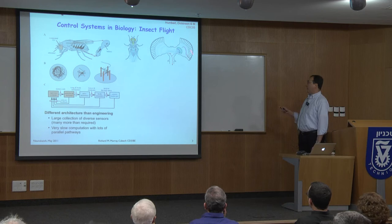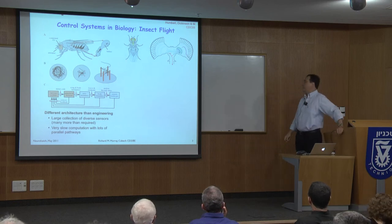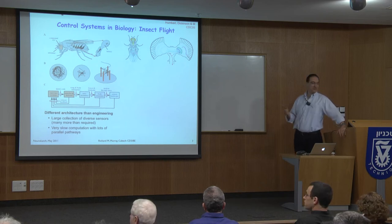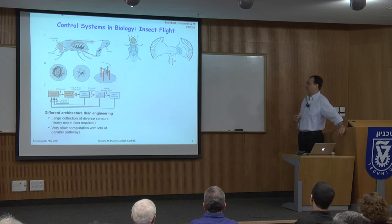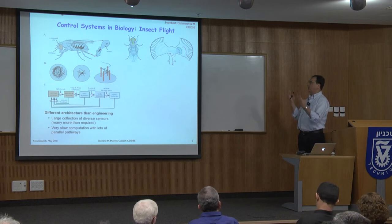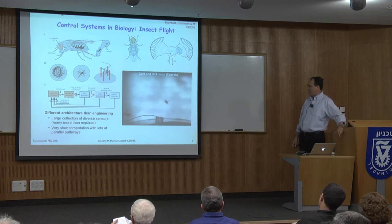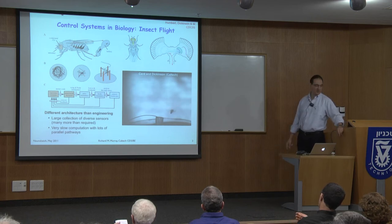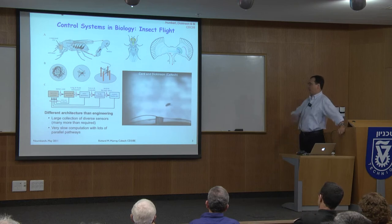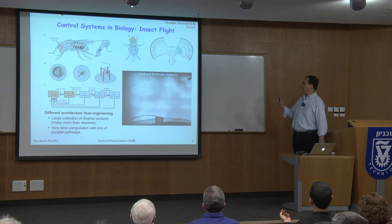Diving into the physiology: we have the omatidia — optical sensors at the very beginning — then elemental motion detectors, then lobular plate tangential cells that integrate information at the next level. Every hair is a sensor; there are antennae, ariste, other optical sensors, and halteres which are gyroscopes. One interesting challenge is that this collection of relatively slow computation implements amazing maneuvers — the fly can jump up tumbling and somehow stabilize into upright flight. This is captured at about 6000 frames per second; the wings flap at about 60 hertz.